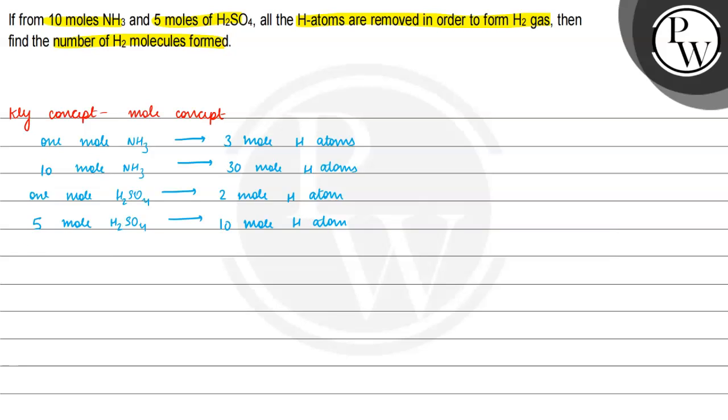So we have 10 plus 30 is equal to 40 mole H atoms. So 20 mole H2 gas form.